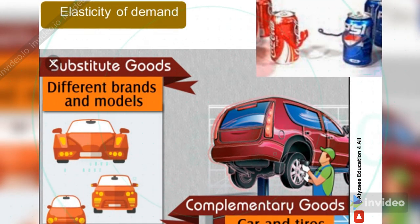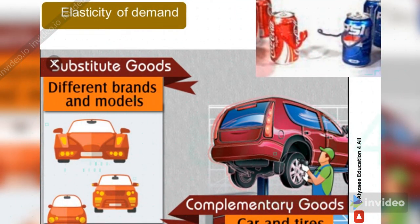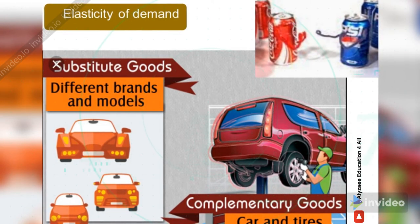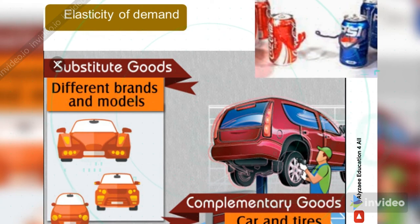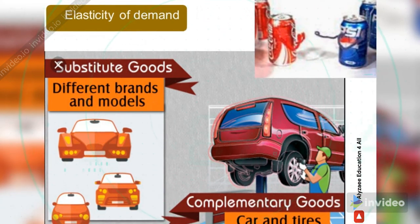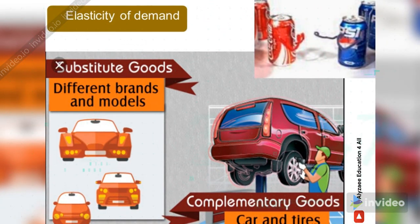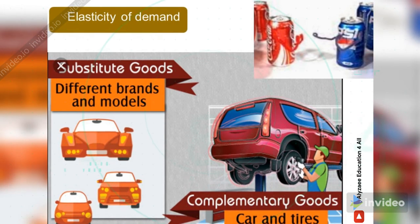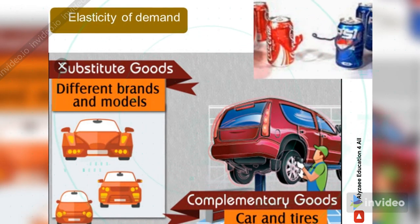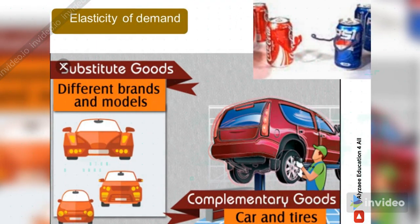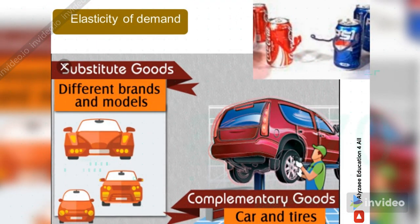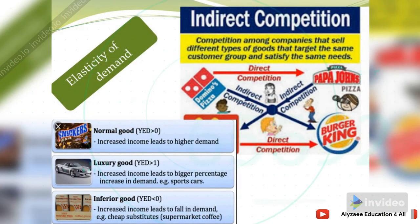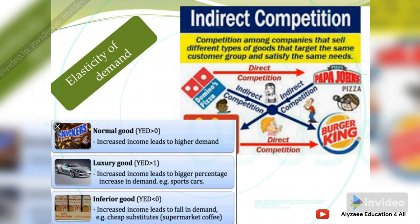Regarding complementary goods, the example of car and tire — they are complementary to each other. Bikes and helmets are complementary to each other. These examples are better for understanding the elasticity of demand concept, and we can also understand competition among companies that sell different types of goods.